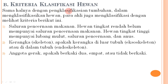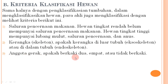Kriteria klasifikasi hewan meliputi: pertama, saluran pencernaan makanan — hewan tingkat rendah belum mempunyai saluran pencernaan, hewan tingkat tinggi mempunyai lubang mulut, saluran pencernaan, dan anus; kedua, kerangka atau skeleton, apakah eksoskeleton (di luar) atau endoskeleton (di dalam); ketiga, anggota gerak, apakah berkaki dua, empat, atau tidak berkaki.